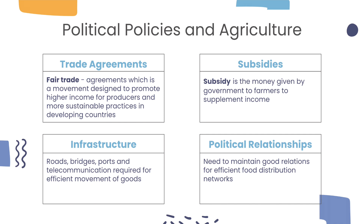Lastly, political relationships are also crucial for food distribution networks. Food distribution can be disrupted if countries are not able to maintain good relations.